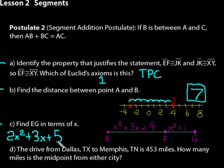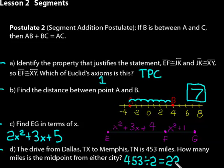Problem D: the drive from Dallas to Memphis is 453 miles. How many miles is the midpoint from either city? We think about midpoints — they make both sides congruent. So we just calculate 453 divided by 2, which equals 226.5 miles. That's how many miles the midpoint is from either city. Okay, that's all for lesson two.